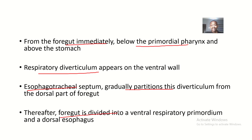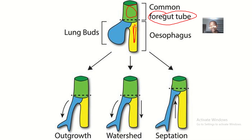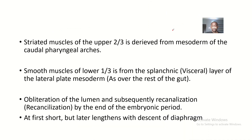The foregut is then divided into a ventral respiratory primordium and a dorsal esophagus. Ventrally, at the front, the respiratory primordium is destined to form the trachea, the larynx, and the lungs. Dorsally, at the back, the esophagus develops. The caudal part of the respiratory diverticulum forms the lungs, the middle part forms the trachea, and the upper part forms the larynx.